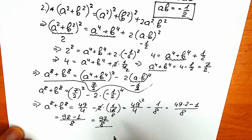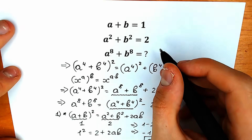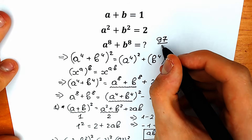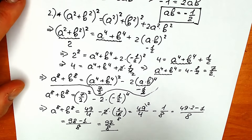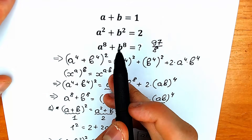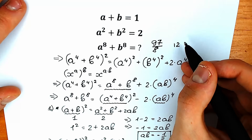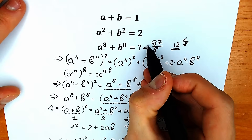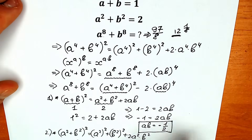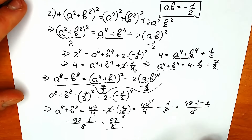We found our answer: a to the eighth plus b to the eighth equals 97 over 8. As you can see, this is not close to 8 as we originally guessed — it's actually about 12 and one eighth. The correct answer is 97 over 8.